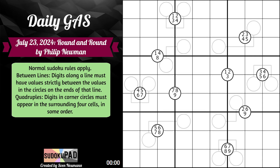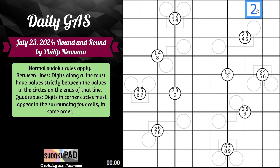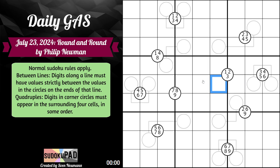Then for our quadruples — for example here, 2, 3, 4, 5. All that's saying is the digits 2, 3, 4, and 5 must appear in these four cells. So placing 2 here would break this quadruple because 2 could never appear inside those cells. Same thing applies over here. Even though there aren't four digits, we know three of the digits must be 1, 2, 3, and the last one could be anything as long as it doesn't conflict by Sudoku.